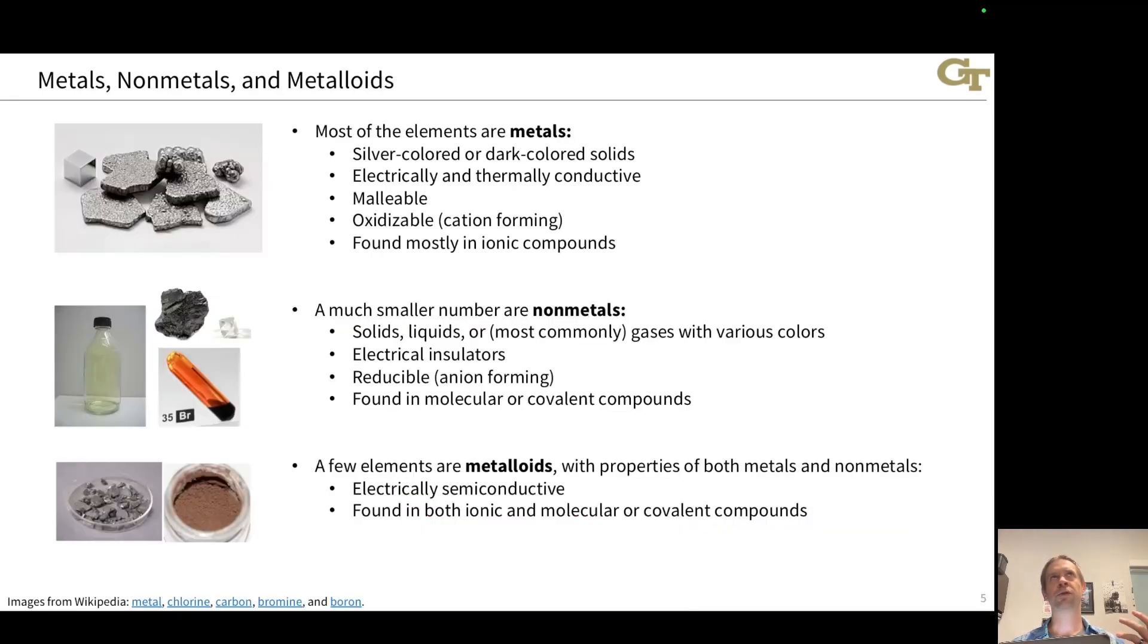Probably the most important coarse distinction between the elements on the periodic table is the metal-nonmetal distinction. Most of the elements on the periodic table are metals. They're silvery or dark colored solids. They're electrically and thermally conductive. They're malleable, meaning we can mold them into various shapes. They tend to form cations. They're oxidizable, and they're found mostly in ionic compounds. They tend not to form covalent bonds.